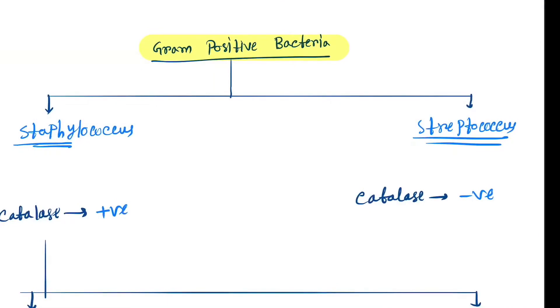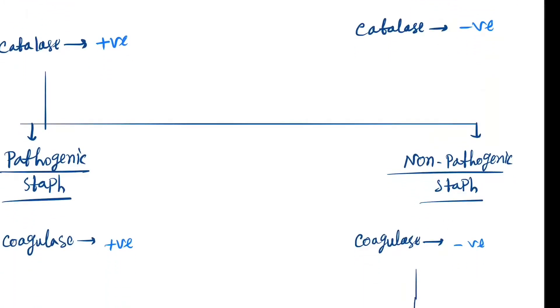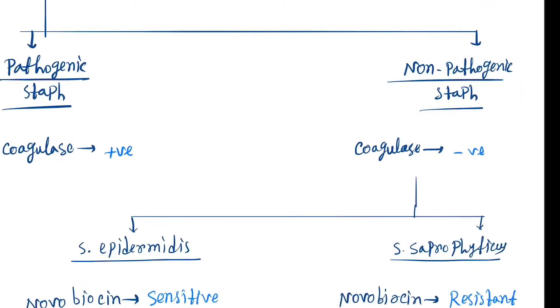Hello friends, today our topic is gram-positive bacteria, that is staphylococcus and streptococcus, so how to differentiate between them. Here is a flowchart. Staphylococcus is catalase positive and streptococcus is catalase negative.